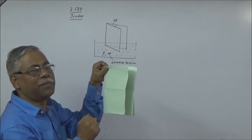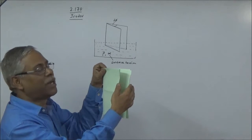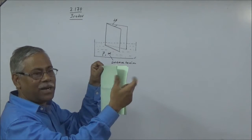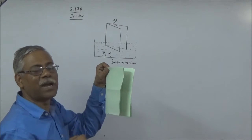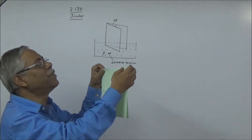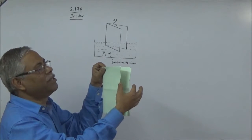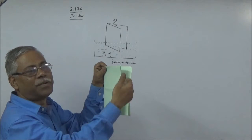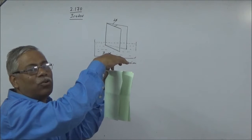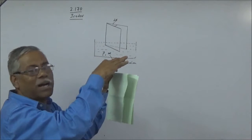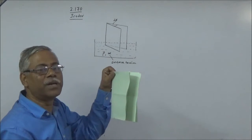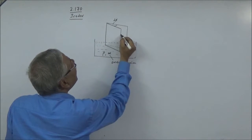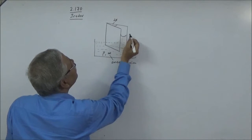But the liquid will not rise to equal heights at every point. The reason is: since h = 2T cosθ / (rρg), greater the radius of the capillary, lesser will be the rise in height. Here the gap is wide so the rise is less; here it is very narrow so R is less and the rise will be greater.